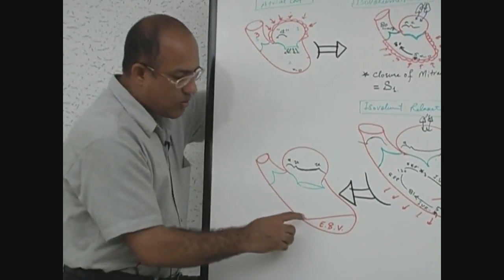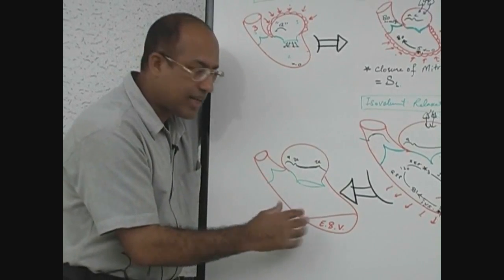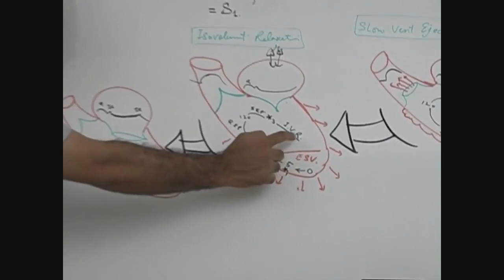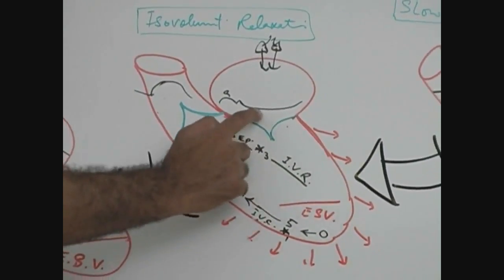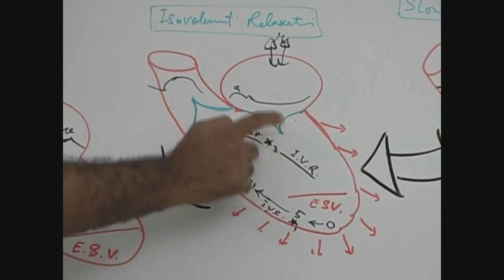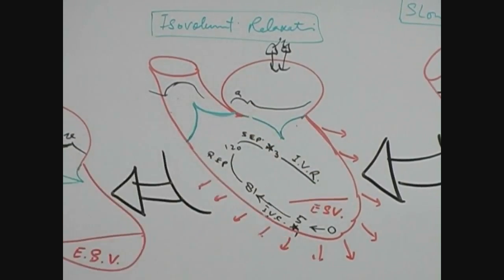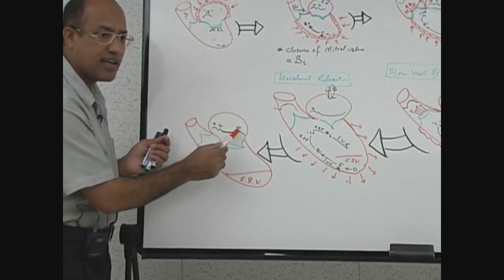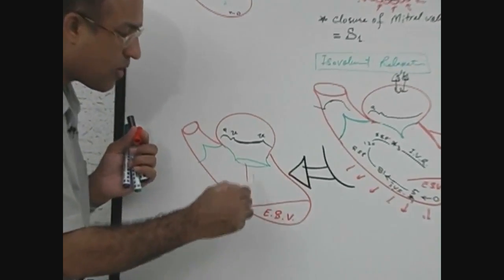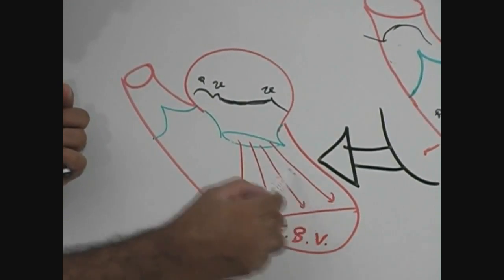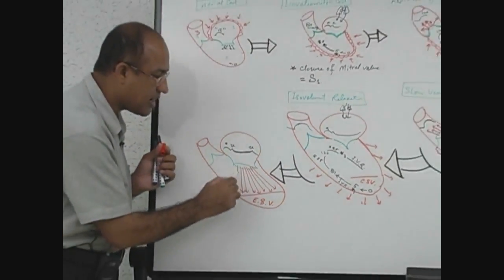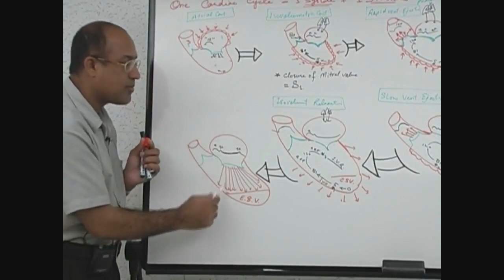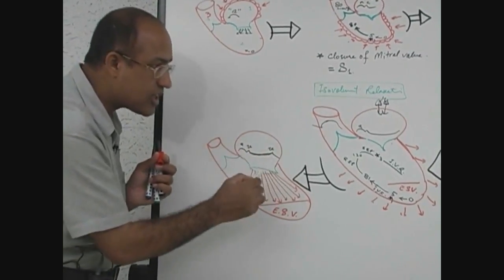As soon as the left ventricle started relaxing, pressure in the left ventricle chamber rapidly started dropping. When pressure in the ventricle became less than atrial pressure, the mitral valve opens. The blood which was previously accumulated there, producing the pressure of the V wave, rapidly falls into the ventricle. This rapid fall of blood into the ventricle is called rapid ventricular filling — but it is without atrial contraction.